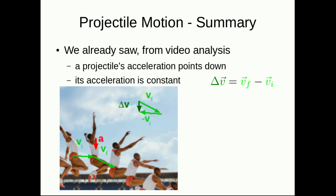We've already seen from video analysis that in projectile motion the acceleration points down and it's constant, and you'll see this in more detail in the lab. So let's think about a consequence of that. Here we see a long jumper with a final and an initial velocity and there's the vector subtraction to get a delta v.